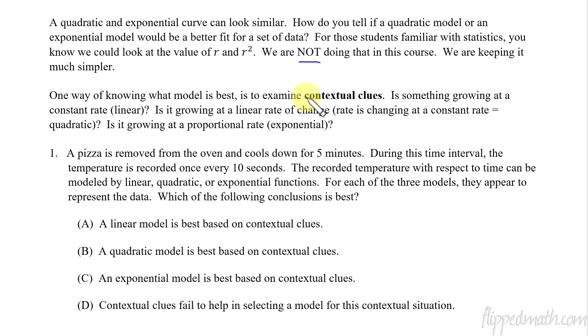So one of the ways, the first thing we're going to look at is this thing called contextual clues. So when we have these contextual clues, what we're looking for is for the scenario, is it something that it's growing at a constant rate? If it is that's linear. Is it growing at a linear rate of change where the rate of change is linear? That means that it is a quadratic. Is it growing at a proportional rate? That would be exponential.